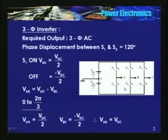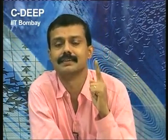Which device is conducting — whether the controllable switch is carrying the current or the anti-parallel diode is carrying the current — we will see while drawing the current waveform. I will assume the load is delta connected, wherein the phase voltage is the same as the line voltage. If I know the line voltage and the nature of the load, it is possible to draw the phase current. Phase current in the delta-connected load is phase voltage divided by the impedance of that branch.